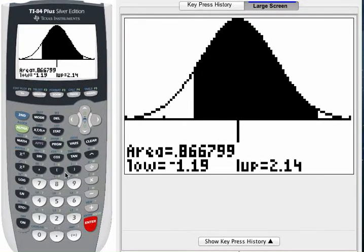The area under the curve, remember, represents the percentage of observations between that lower and upper boundary, so we have about 87 percent, 86.7 percent of observations between those two Z scores.